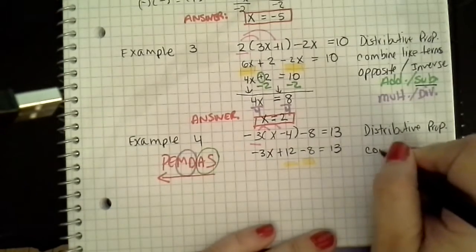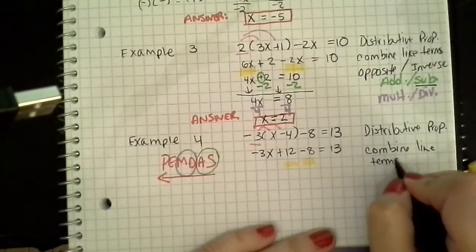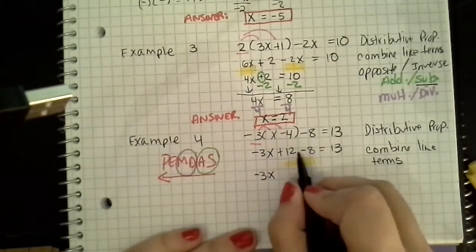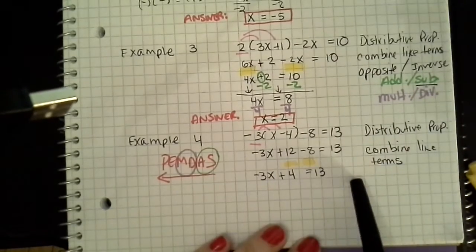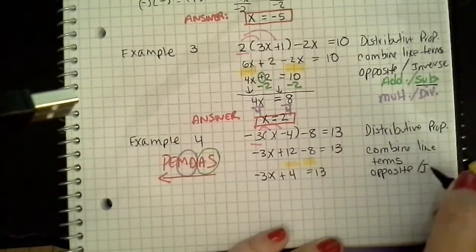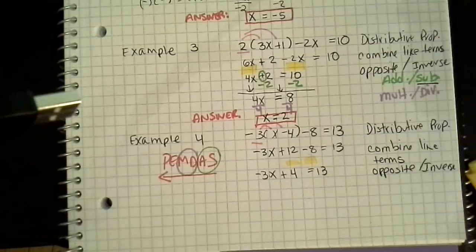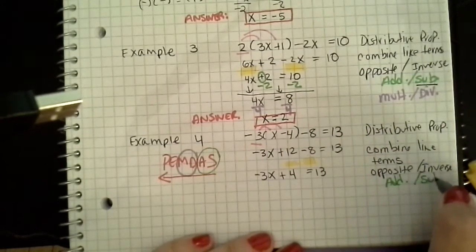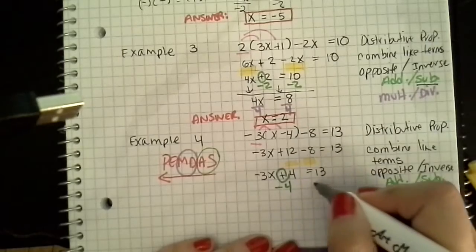So if I do that, I end up with negative 3x. 12 minus 8 is just a positive 4. No more like terms. So then I move on to opposites and inverse. And when I do this, I begin with addition and subtraction. So I look at this — I'm adding a 4. So that means I have to subtract 4 from both sides. So I'm choosing the opposite of addition, which is subtraction.